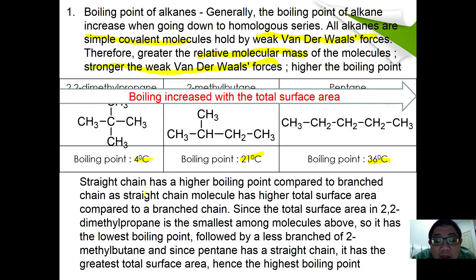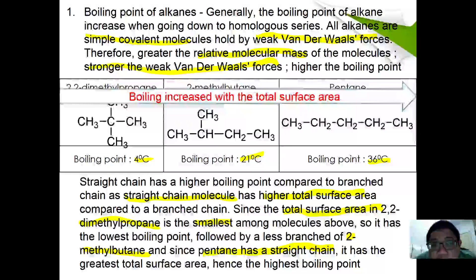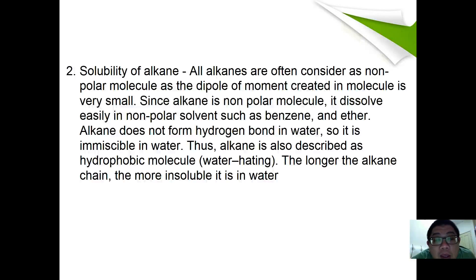This difference can be due to total surface area. A straight-chain molecule has a higher total surface area compared to a branched chain. The total surface area of 2,2-dimethylpropane is the smallest, followed by 2-methylbutane, and then pentane, which as a straight chain has the greatest total surface area and therefore the highest boiling point.